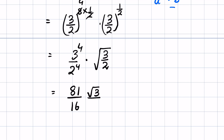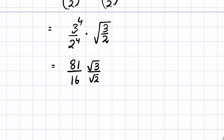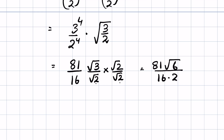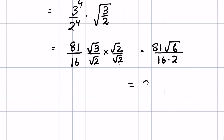To remove the square root from the denominator, we rationalize by multiplying and dividing by square root of 2. So this is 81 times square root of 6 upon 16 times 2, because square root of 2 times square root of 2 is 2. So finally we have 81 times square root of 6 upon 32. This is our answer. Like and subscribe, thanks for watching.